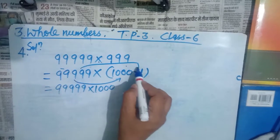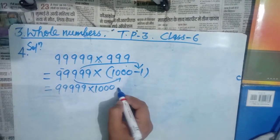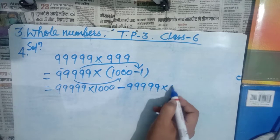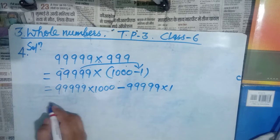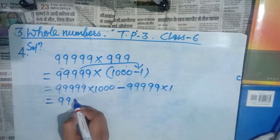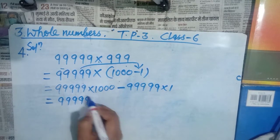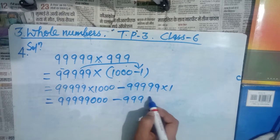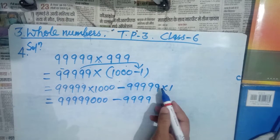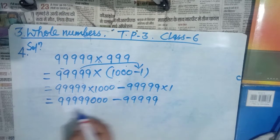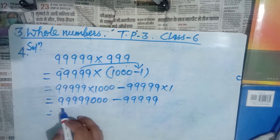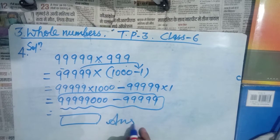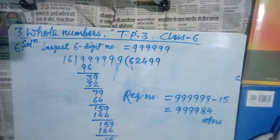Then minus 99999 × 1. Any number multiplied by 1 gives the same number. Now find the subtraction: 99999000 − 99999, and this gives you your answer. I hope you are getting it.